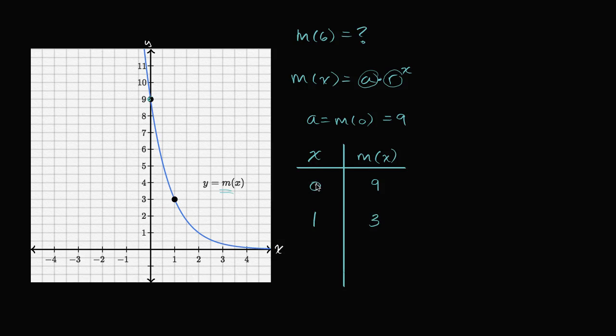So when we increase our x by one, what happened to our m of x? Well, what did we have to multiply it by? Well, to go from nine to three, you multiplied by one-third. So that's going to be our common ratio.